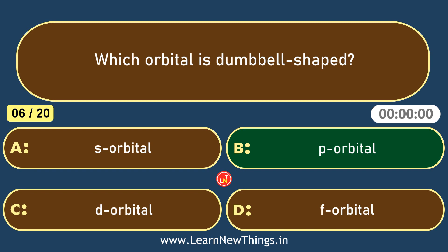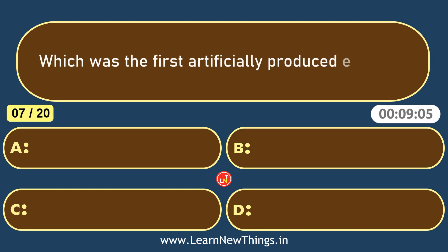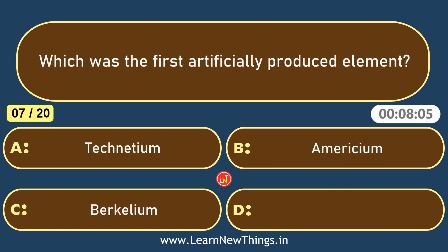Which was the first artificially produced element? Technetium.